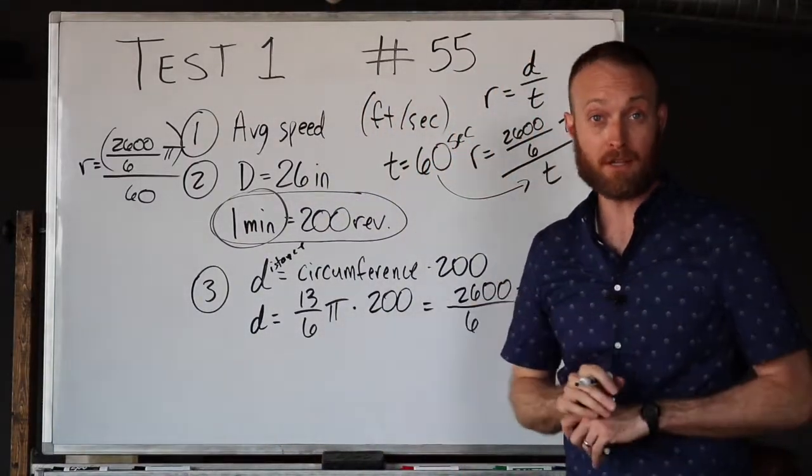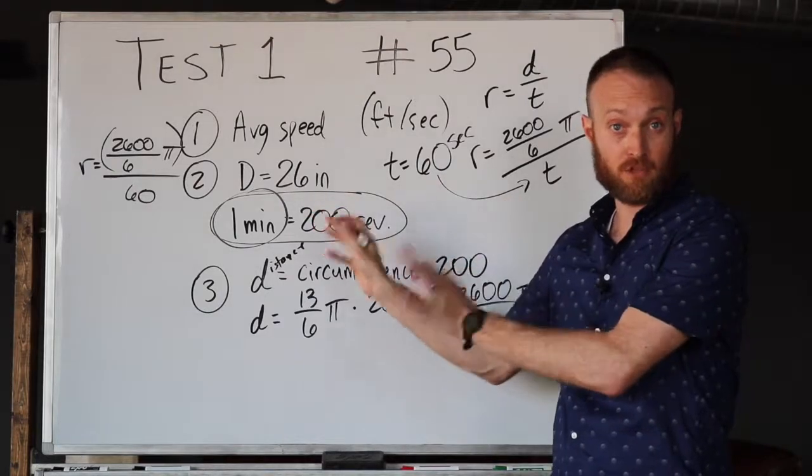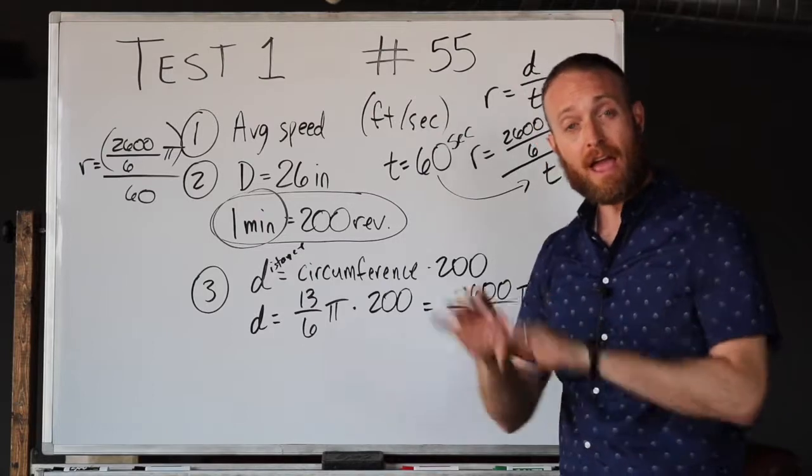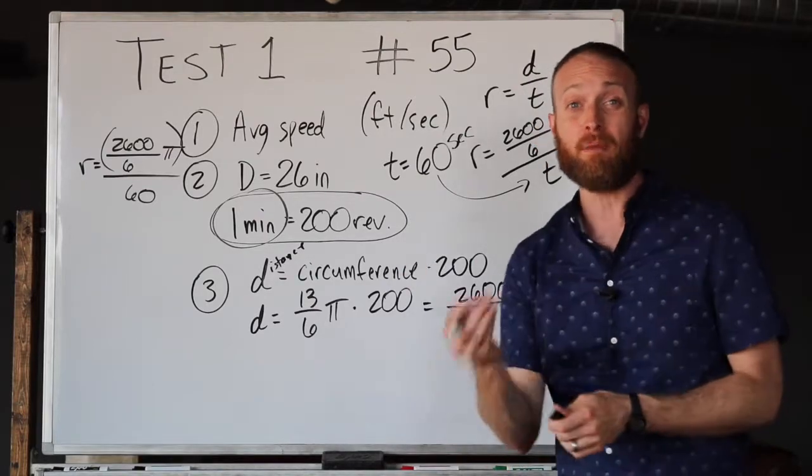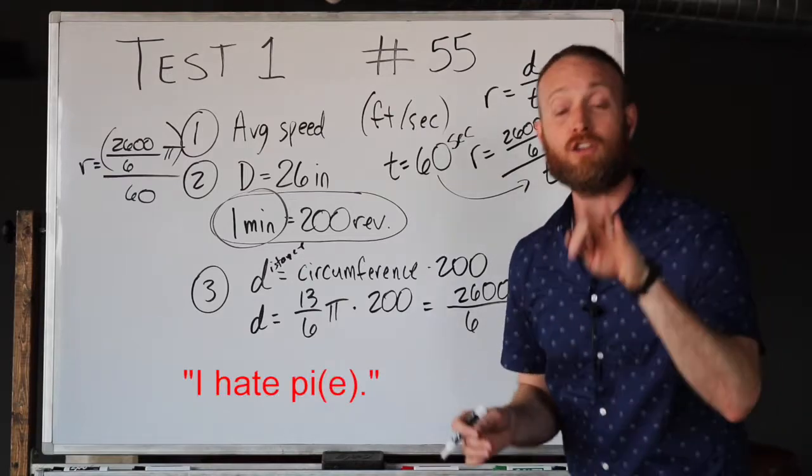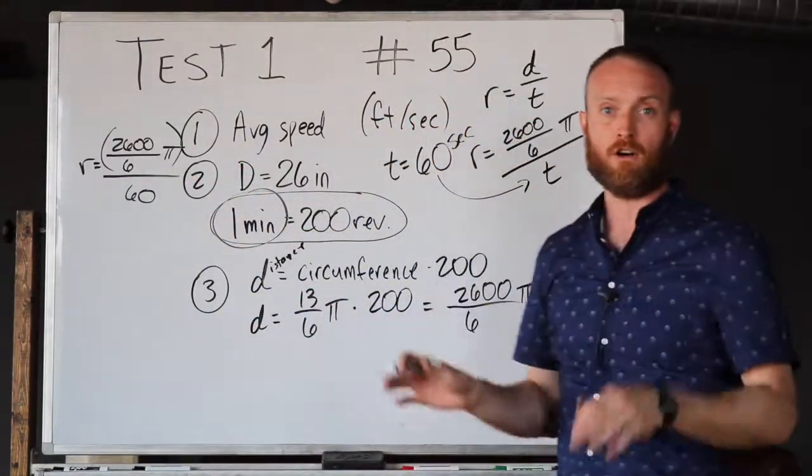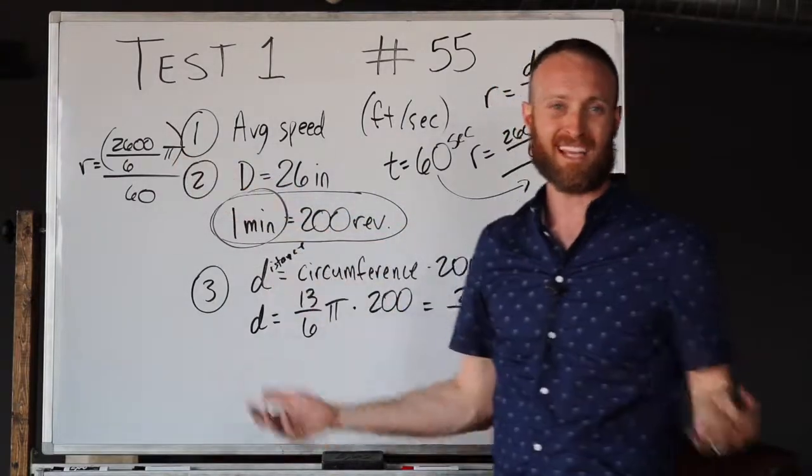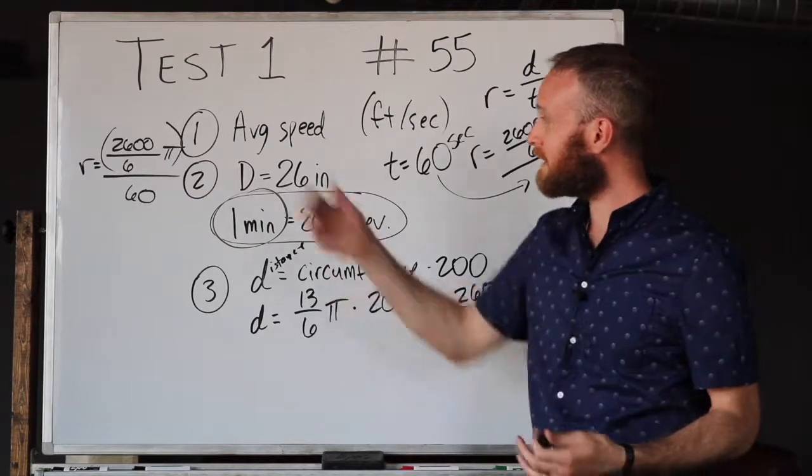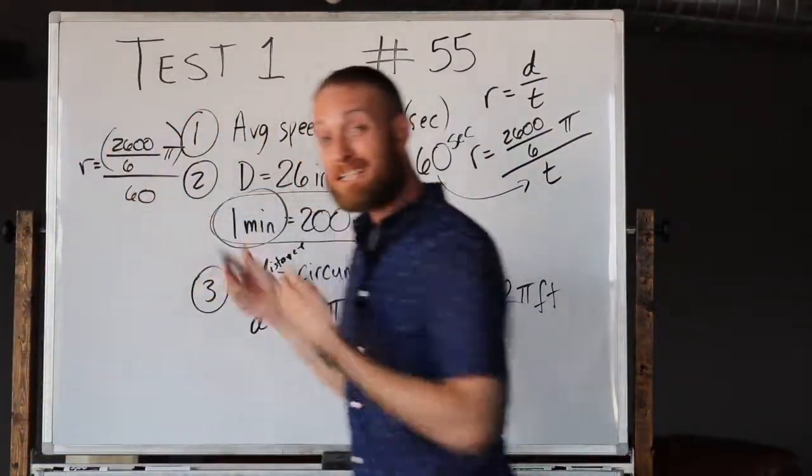Now depending on your calculator abilities, some of you could probably just plug that in as is using parentheses and get the right answer. But notice the answer choices - every answer choice on this problem keeps π in it. That's a good thing because it allows the manipulation of these other numbers not to get involved with crazy decimals like π, which is an irrational number.